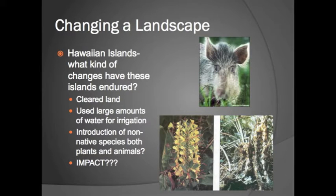What kind of impact have humans had on a changing landscape of the world? For example, let's look at the Hawaiian Islands. Once a raw island chain made of volcanoes, now it has cleared land, structures, resorts, and places for people to visit. They have to use large amounts of water for the irrigation of crops like coffee and pineapple, and there's been the introduction of both native and non-native species that have impacted the islands.